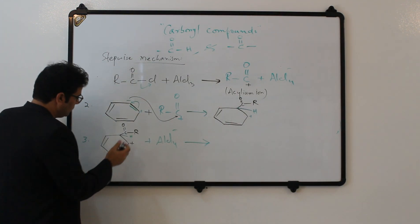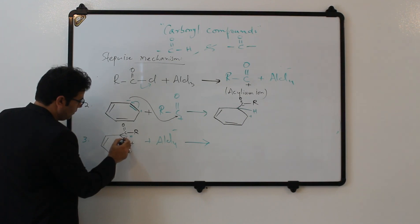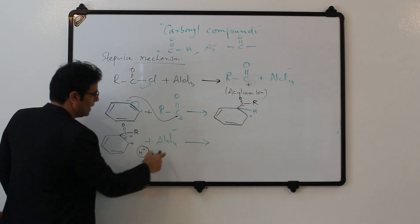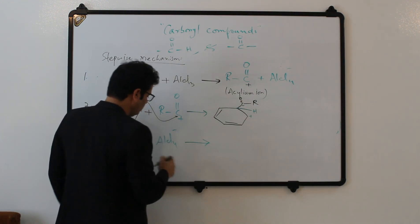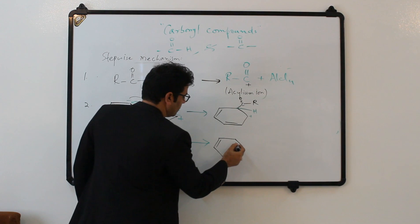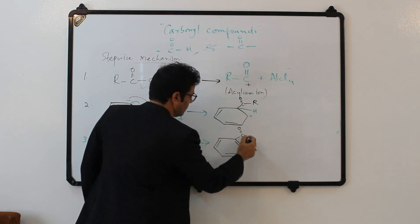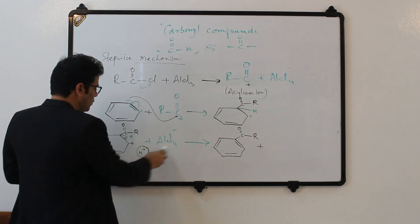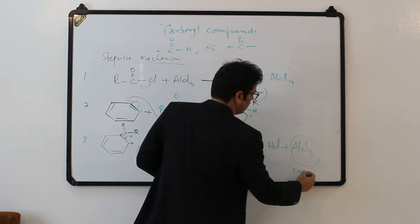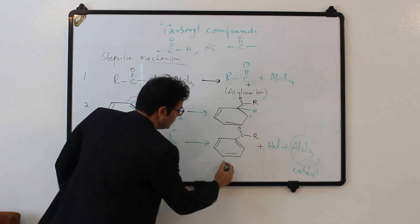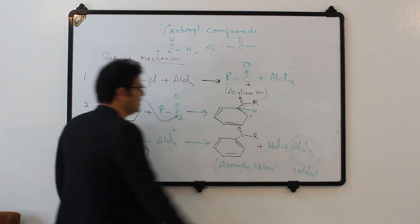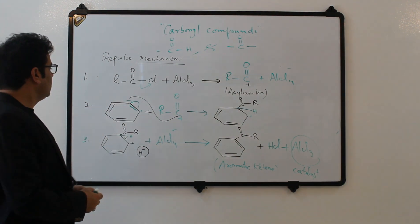Step number three: this unstable molecule — the arenium ion intermediate — reacts with the catalyst we released in step one. The double bond will come back to restore aromaticity. The AlCl4⁻ will attack and release the hydrogen as HCl, and the catalyst AlCl3 is regenerated. The product is the aromatic ketone.